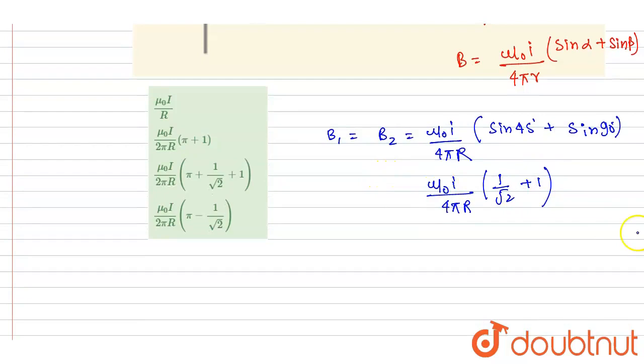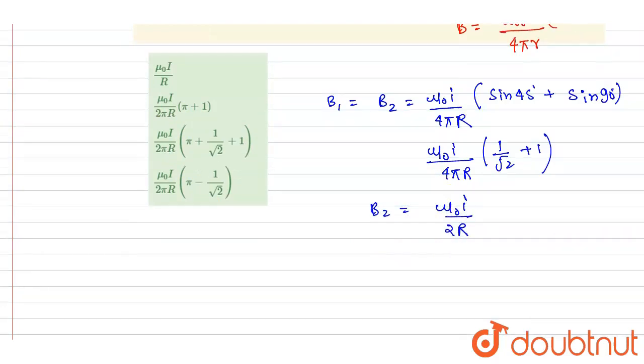Now if you see, we got the magnetic field because of 1 and 2. And we know that because of a circular current carrying wire, the magnetic field at the center is this. Just add the 3.